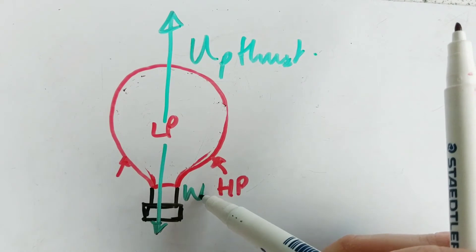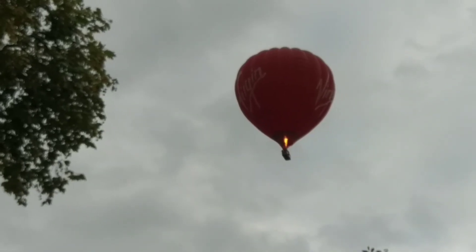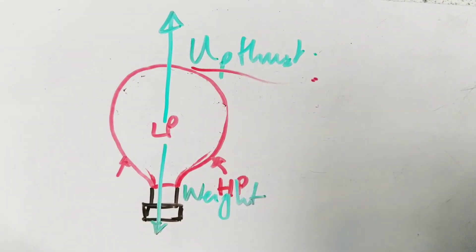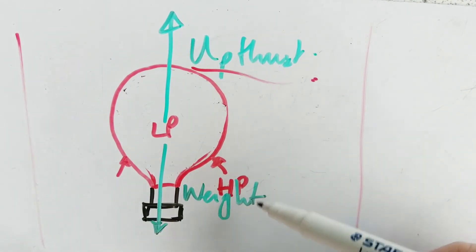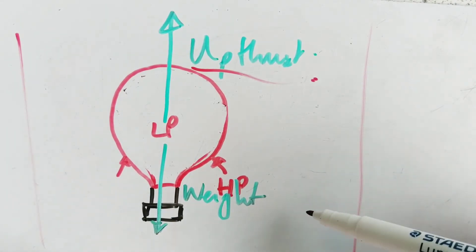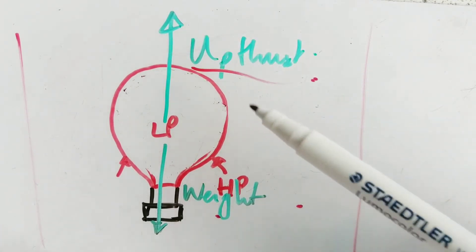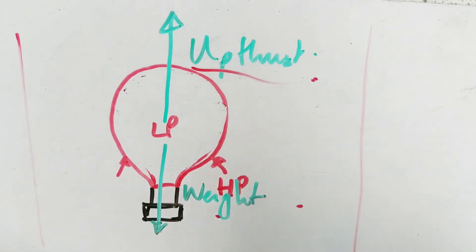We call that net upward force upthrust. If that net force is greater than the balloon's weight, then the balloon will accelerate upwards. Why is upthrust upward? If you imagine the balloon submerged in a column of fluid — the air — there's a slightly higher pressure lower down, so there's a slightly higher pressure underneath the balloon than above it. The net action of that air is upwards. That just shows you what a large pressure atmospheric pressure really is.